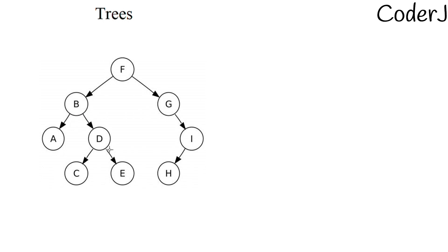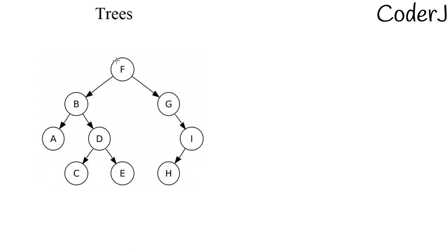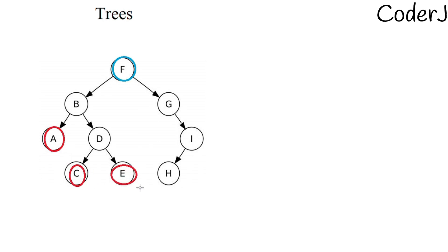B here is a parent node, and A and D are its child nodes. An interesting fact is that F can never be a child node — it will always be a parent node. We call F a root node; it has a special term. And if you notice, A, C, E, and H can never be parent nodes — they will always be child nodes. These nodes have a special term: they are called leaf nodes.